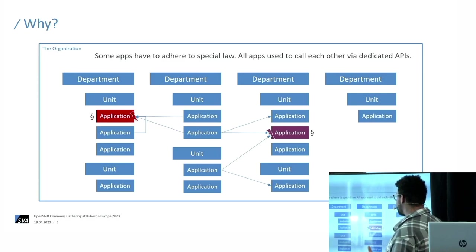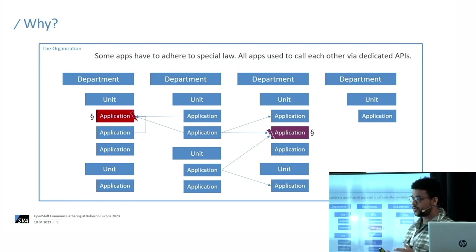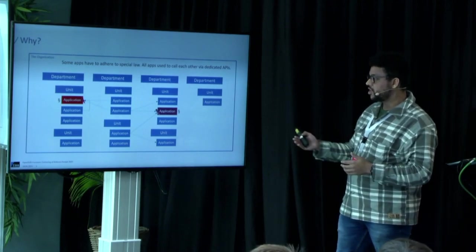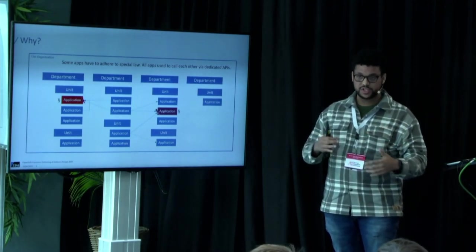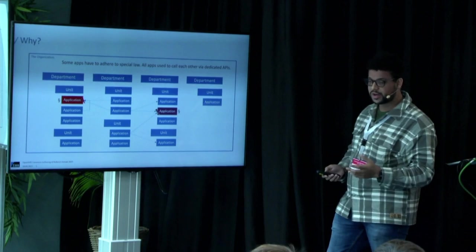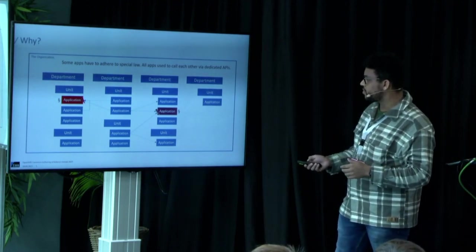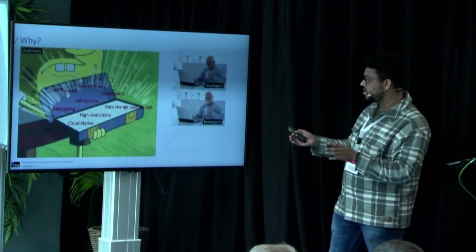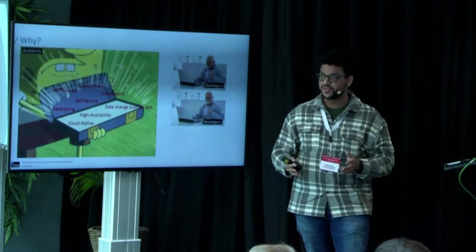And one big use case we identified for the client is notifying about applications state and data changes. There are big data systems at the client side and most applications have their own data approval because they need to be separated. If something changes like a case, they need to notify the other applications. You can imagine if these are hundreds or thousands of applications calling each other via REST calls, it gets quite complex.